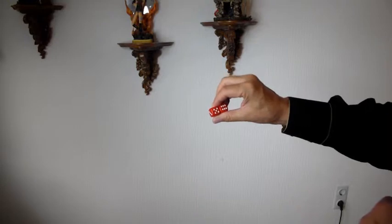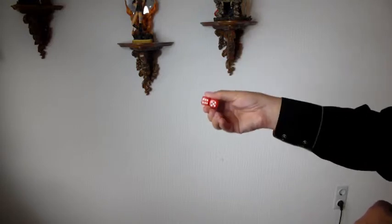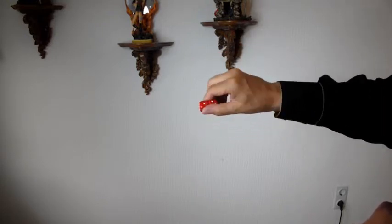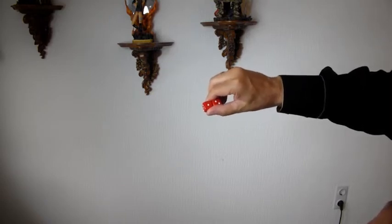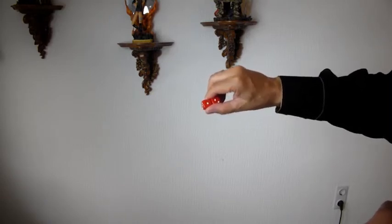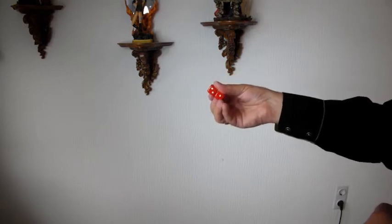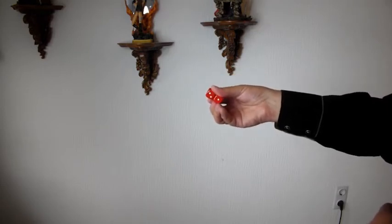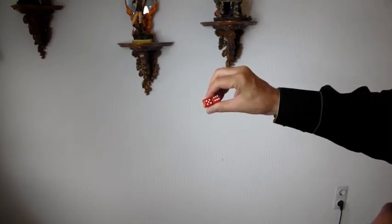Some people tell me I got 11, 11, 11 on all sides. That's nonsense because on top is a 3. Other people tell me I got 3 and 3 and 3, but that's nonsense. On top is 11.